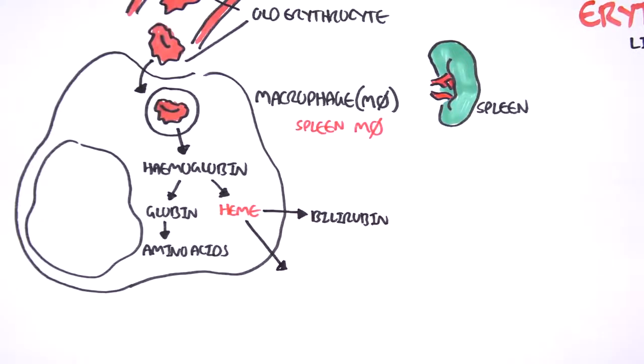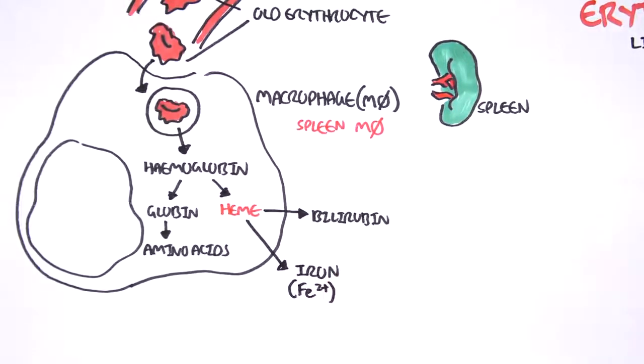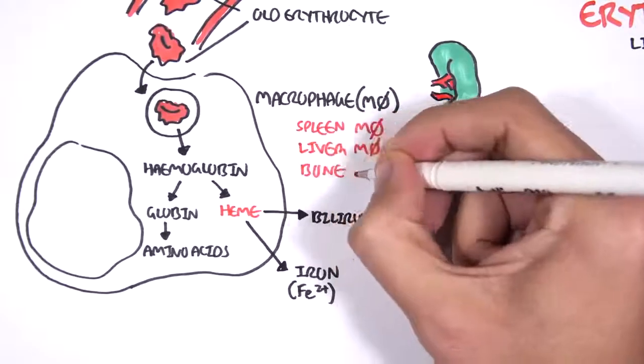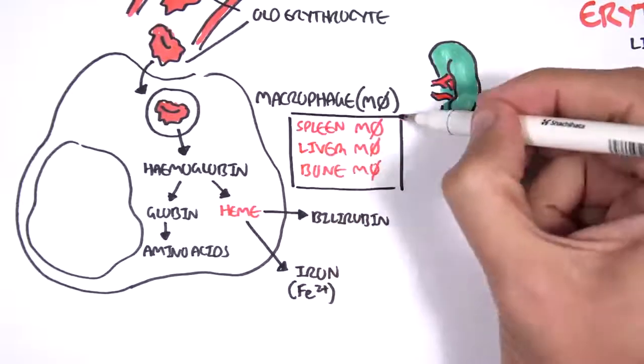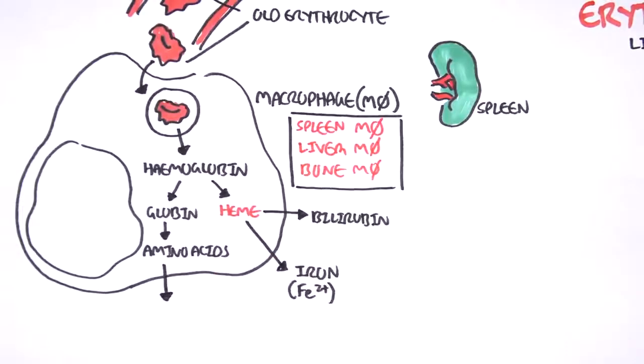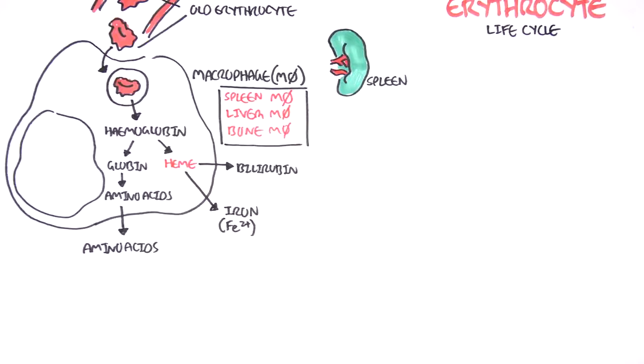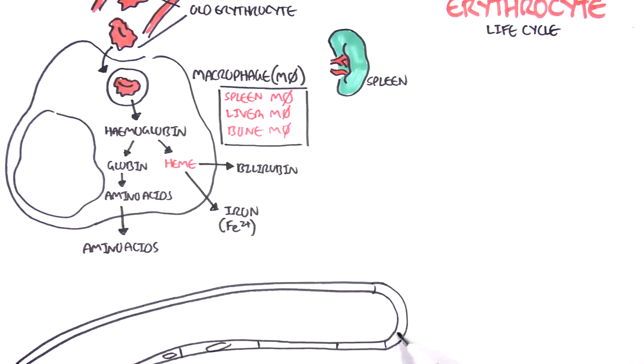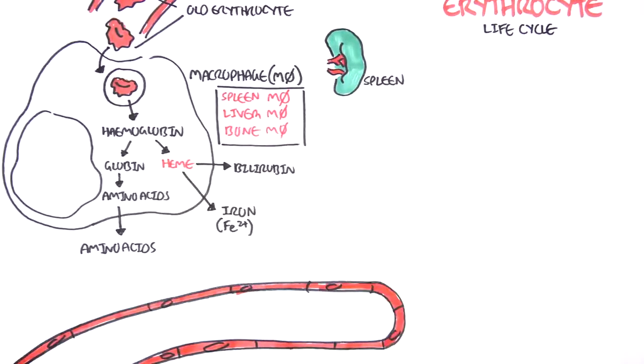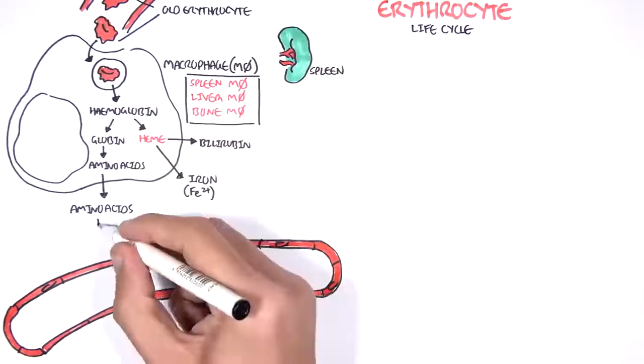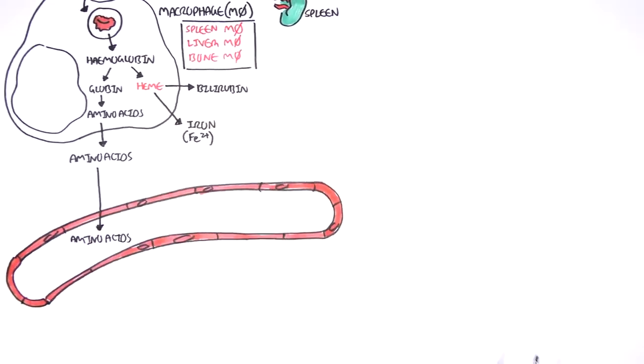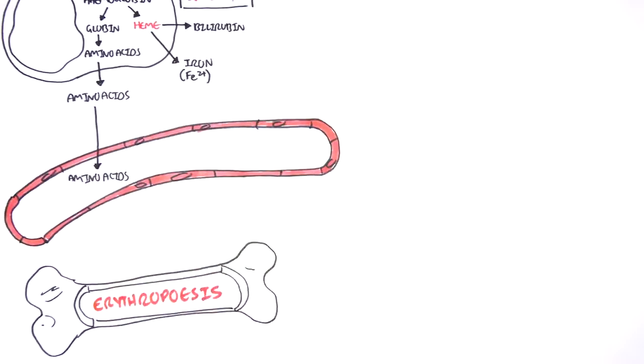And the heme is broken down to two main products: bilirubin, essentially, and iron. These macrophages are not only found in the spleen, as I mentioned, but they're also found in the liver and bone. And they do exactly the same thing. Most of the breakdown product of red blood cells are recycled. So, for example, here the amino acids will enter back to circulation and then will travel to the bone marrow to be used in erythropoiesis again, the production of red blood cells.